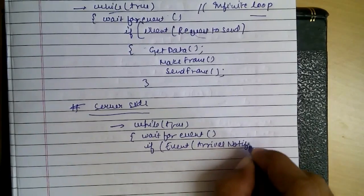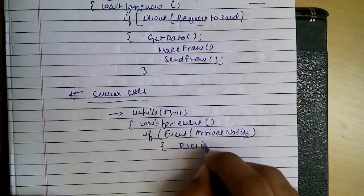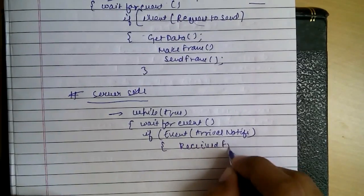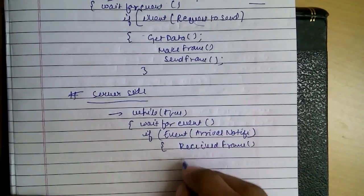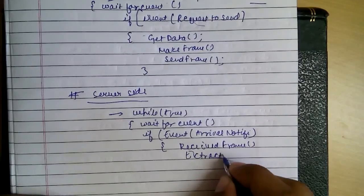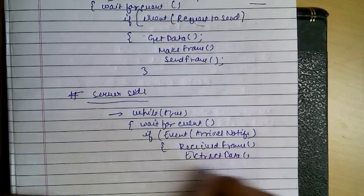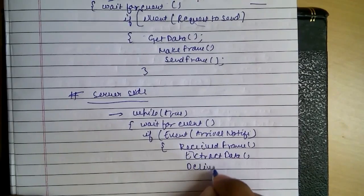Arrival of notification. So when it receives the frame, it receives the frame, and extracts the data by removing the header and those extra information. Then it delivers it to the network layer.